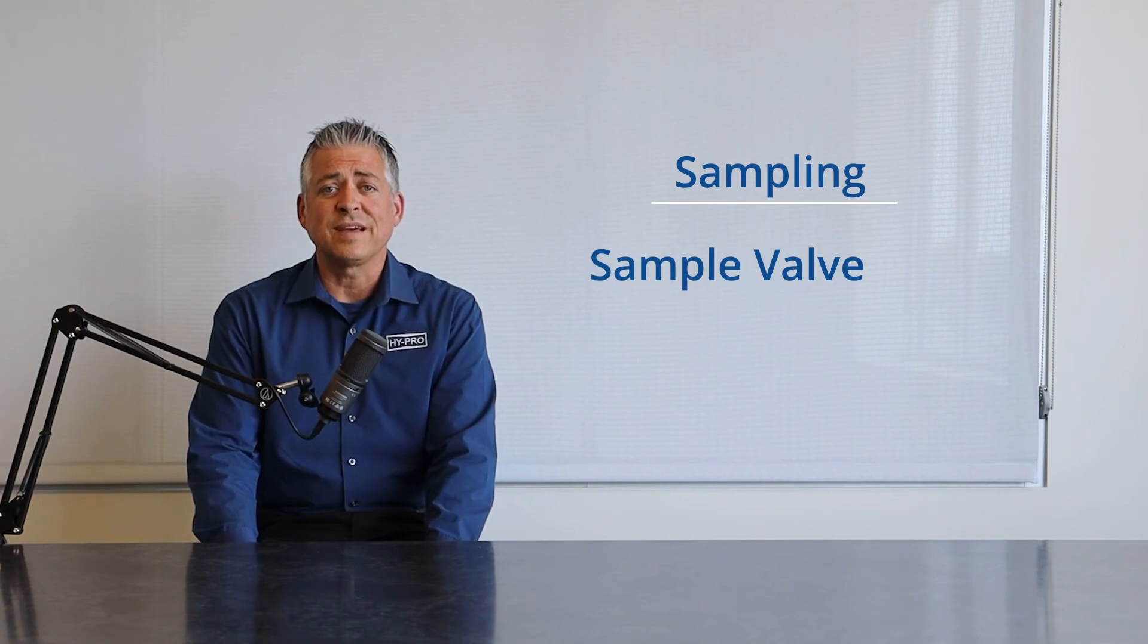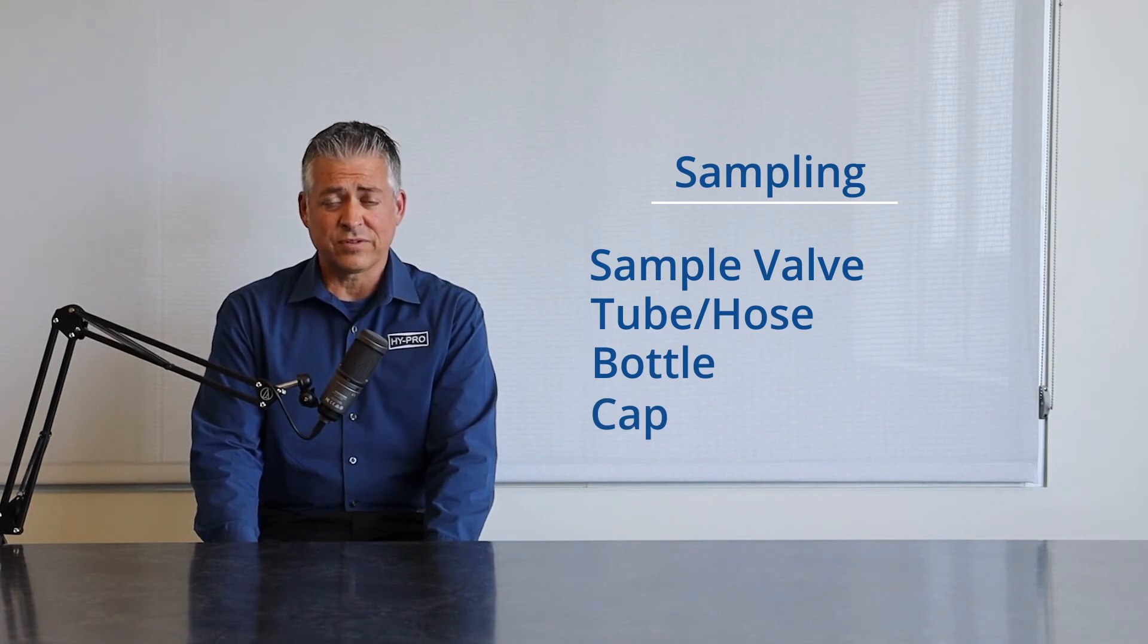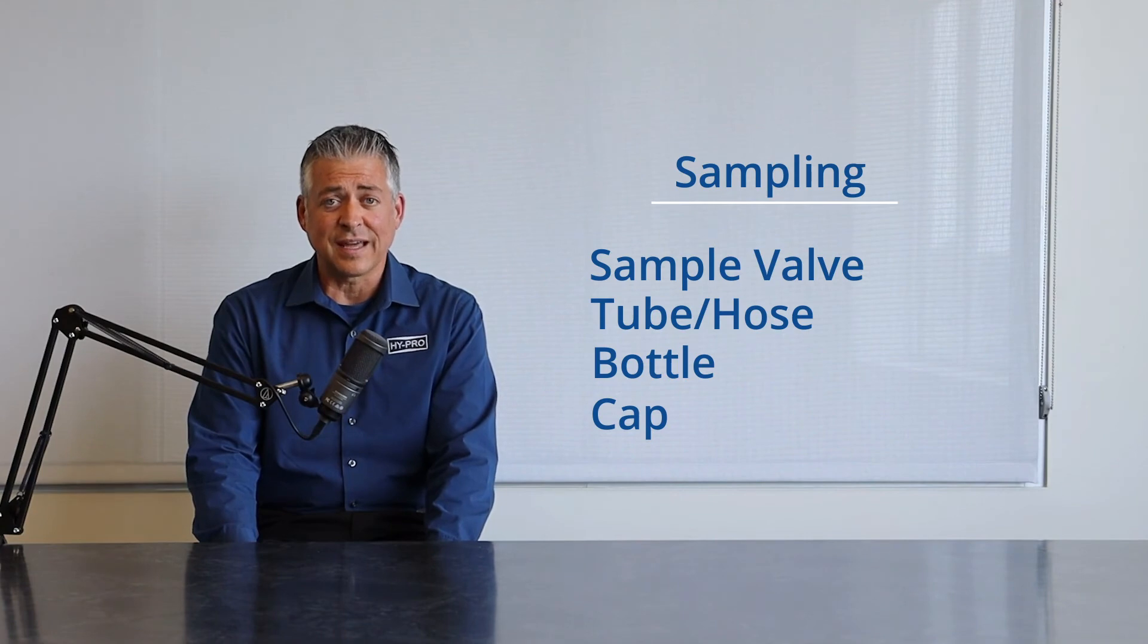I want you to focus on four areas of sampling an oil collection to make sure that flushing is done properly. The sample valve, make sure it's flushed properly. The sample tube or hose. The bottle itself and the cap. All four of those components need to be flushed appropriately before capping the bottle and sending it to the lab or processing it with your laser counter in-house.